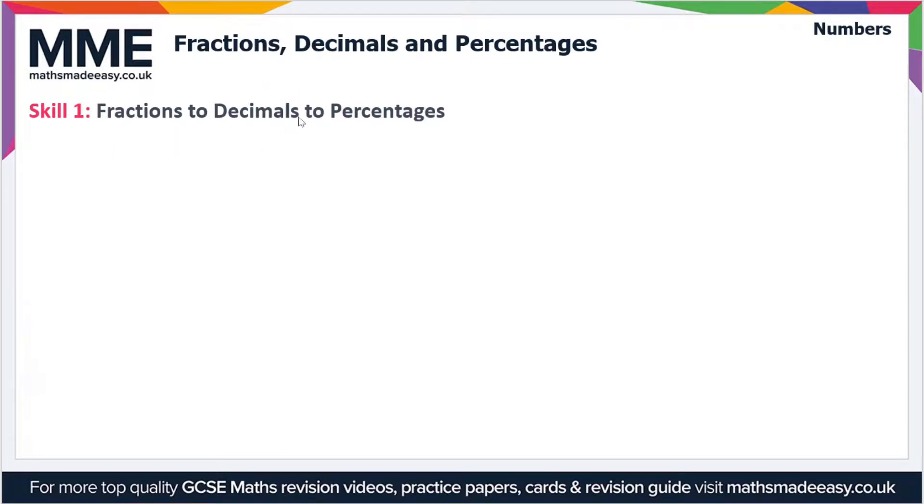Converting to decimals and then percentages. Let's say we've got a fraction, we'll start off simple with a half and we want to convert this to a decimal. How do we convert to a decimal? We treat this fraction as a divide, or this line in the fraction as the divide symbol. So effectively what we're doing is 1 divided by 2, and 1 divided by 2 is 0.5.